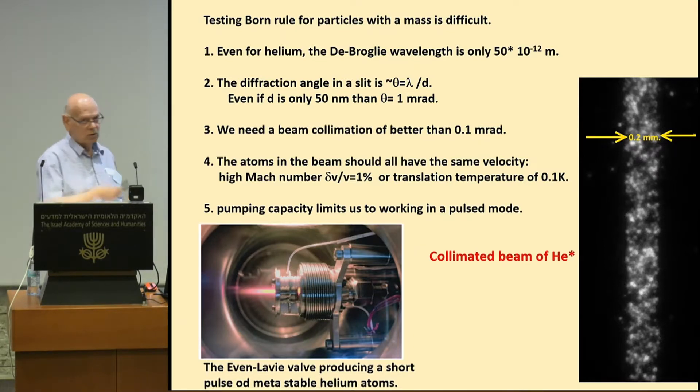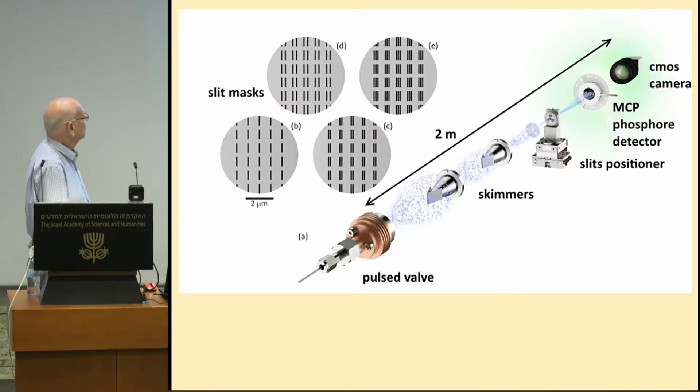So we had to stretch the technology to the limit, produce a very collimated atomic beam, collimated better than this pointer of the laser. This is about 1 milliradian. We had to beam a beam system with 10 times better collimation. And we had to machine the slits to 101 nanometer, which is state of the art technology. You see, this is the system, the way it was looking.